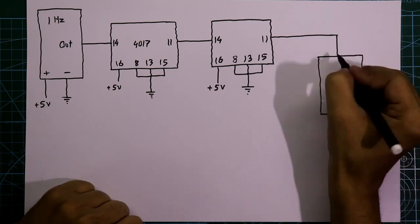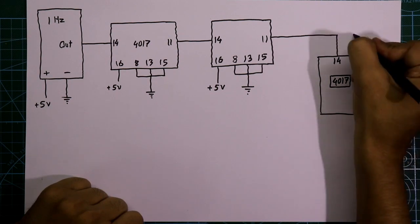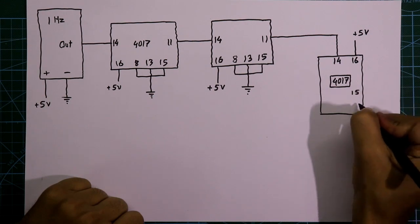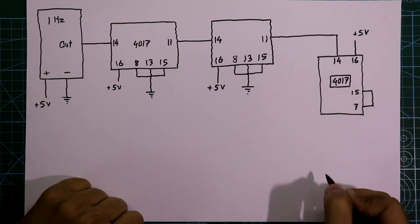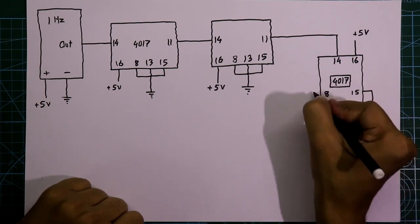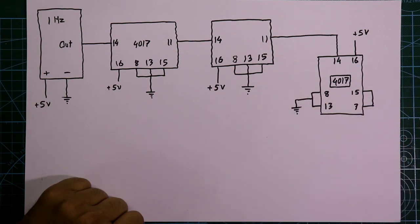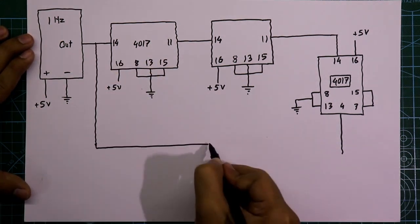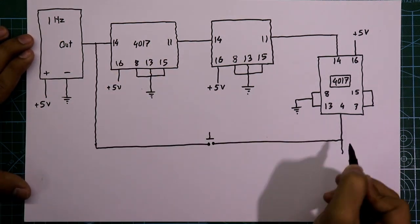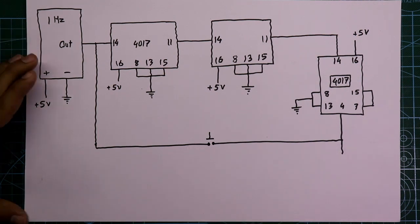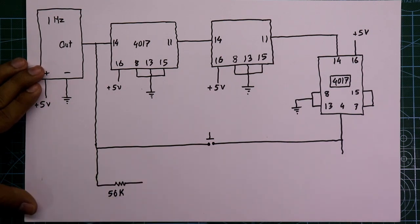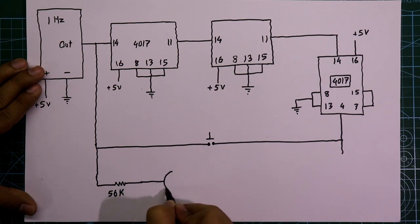Pin number 11 of the second IC is connected to pin number 14 of the third 4017. On this third IC, pin 16 goes to plus 5 volts; pins 15 and 7 are connected together, and pins 8 and 13 go to ground. Pin number 4 of this IC is connected to pin number 14 of the first 4017 through a push-to-on switch.